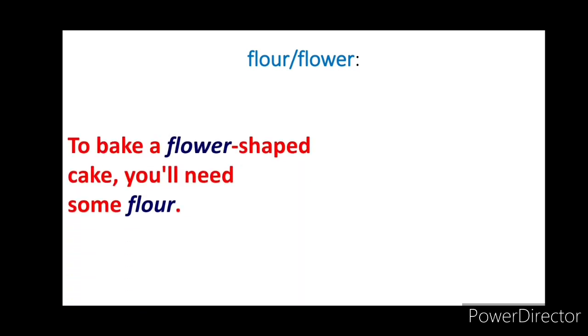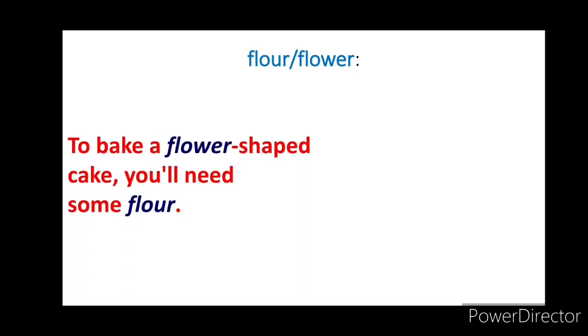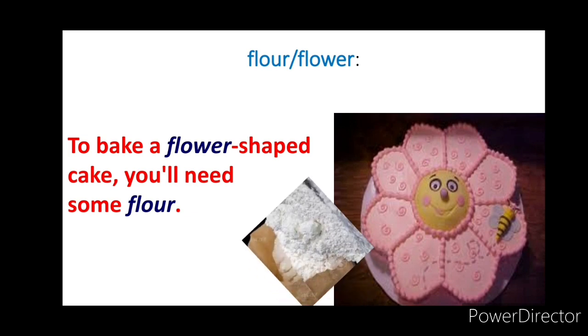F-L-O-U-R, 'flour'. F-L-O-W-E-R, 'flower'. Example sentence: To bake a flower-shaped cake, you will need some flour. Here, F-L-O-W-E-R is the seed-bearing part of a plant, specially surrounded by brightly colored petals, whereas F-L-O-U-R is a powder made by grinding raw grains, nuts, or seeds used to make different foods.